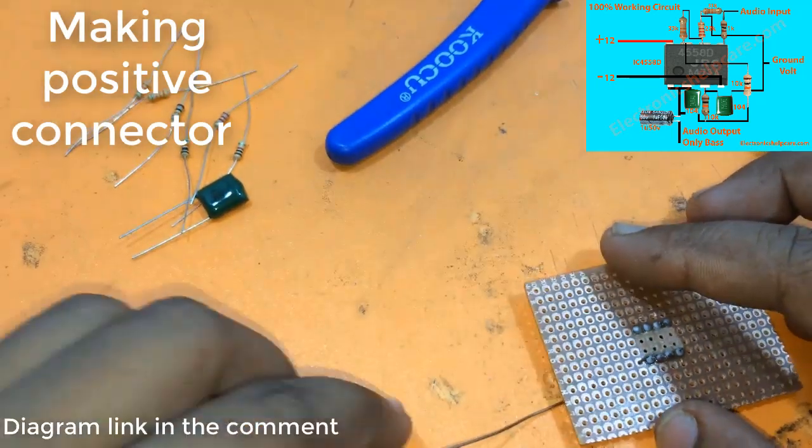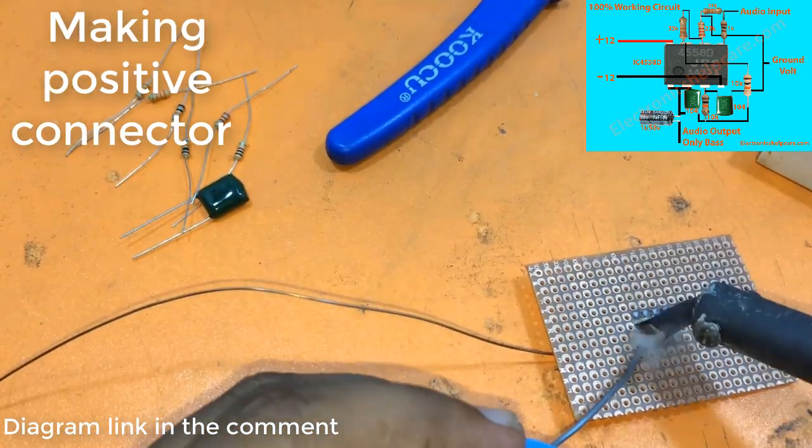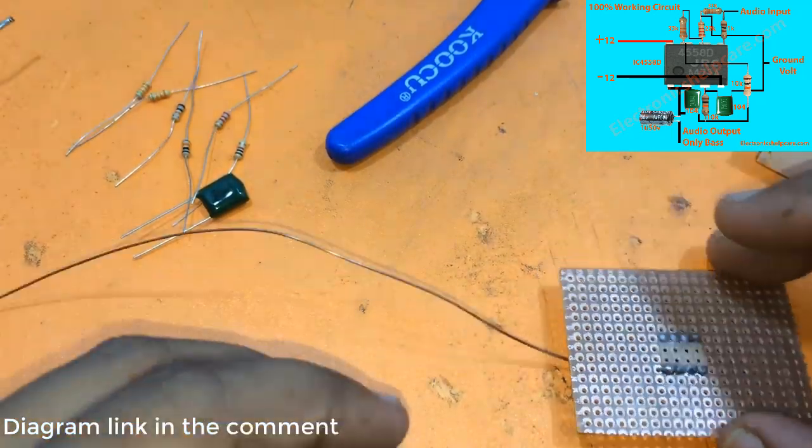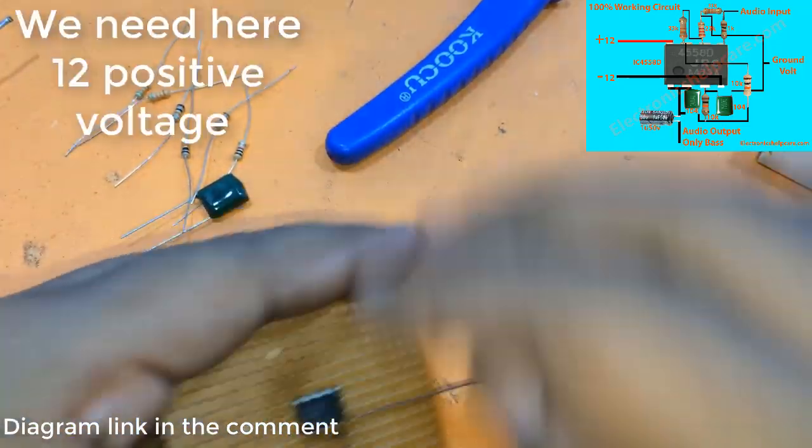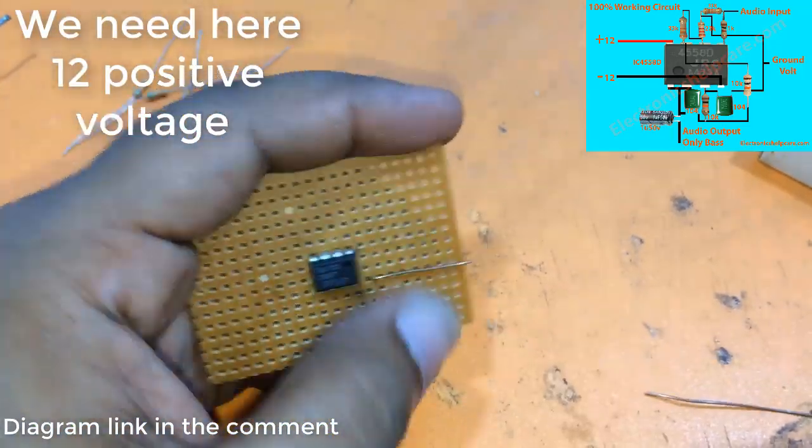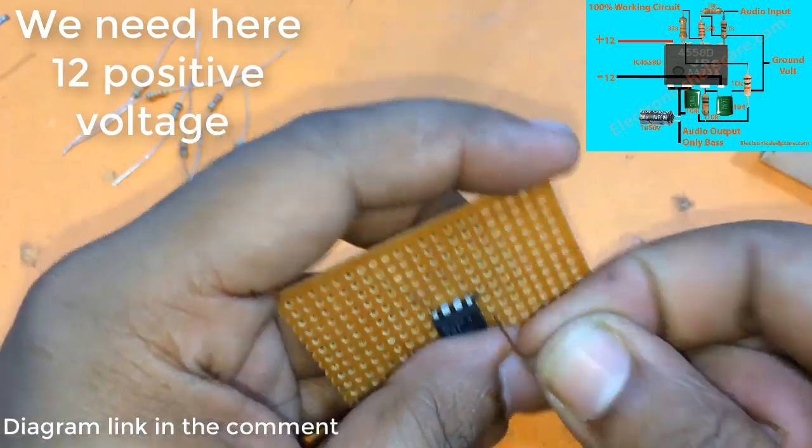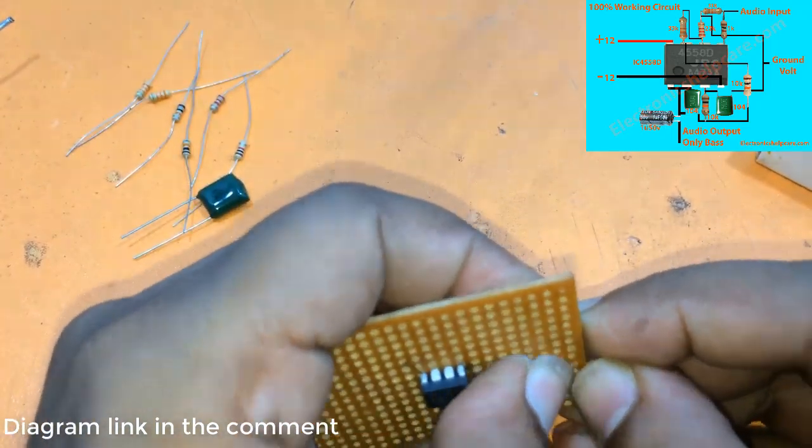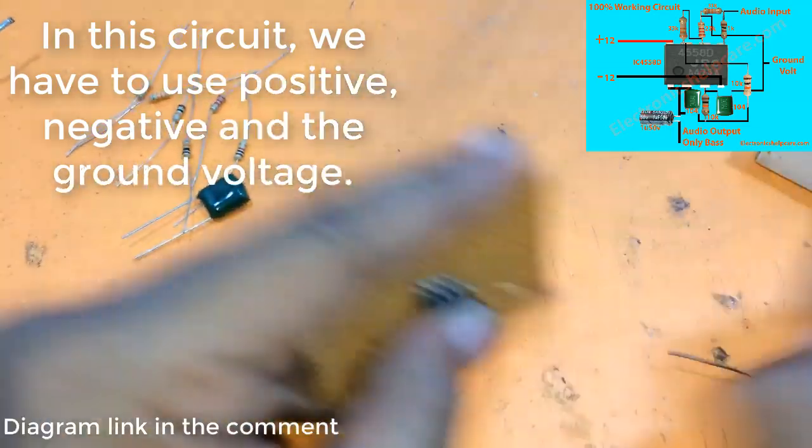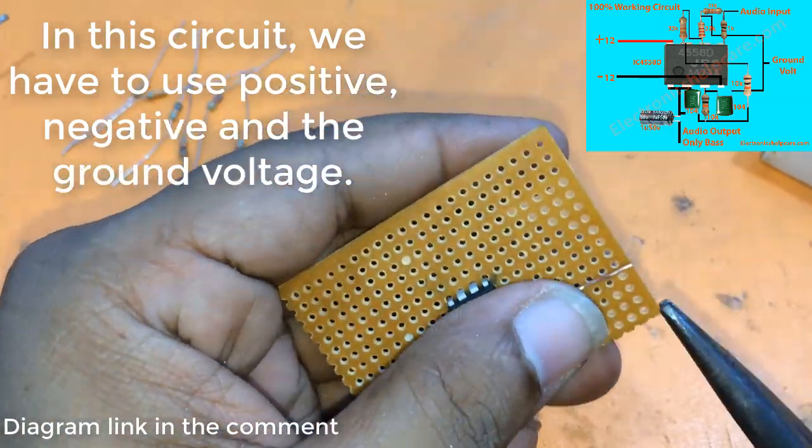Making positive connector. We need here 12 positive voltage. In this circuit, we have to use positive, negative and the ground voltage.